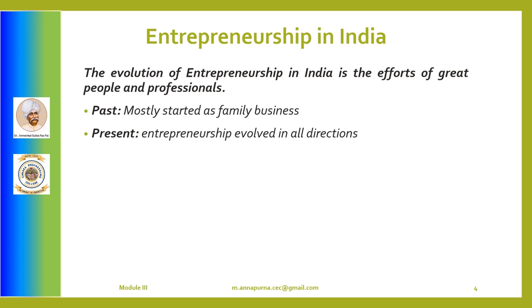The industrial activity was controlled by the caste system. For example, weavers used to weave cloth, goldsmiths used to make ornaments, and farmers used to produce food products. The skill of an enterprise was inherited from ancestors, and trade activity was dependent on the caste system. Farming-based industries and trade were badly affected during British rule.